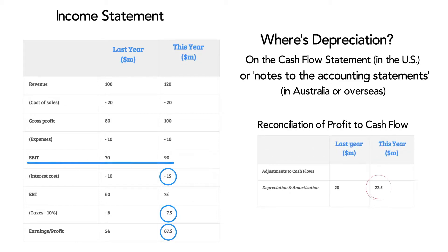Simply add depreciation and amortization to the EBIT figure you calculated earlier and that gives you EBITDA.